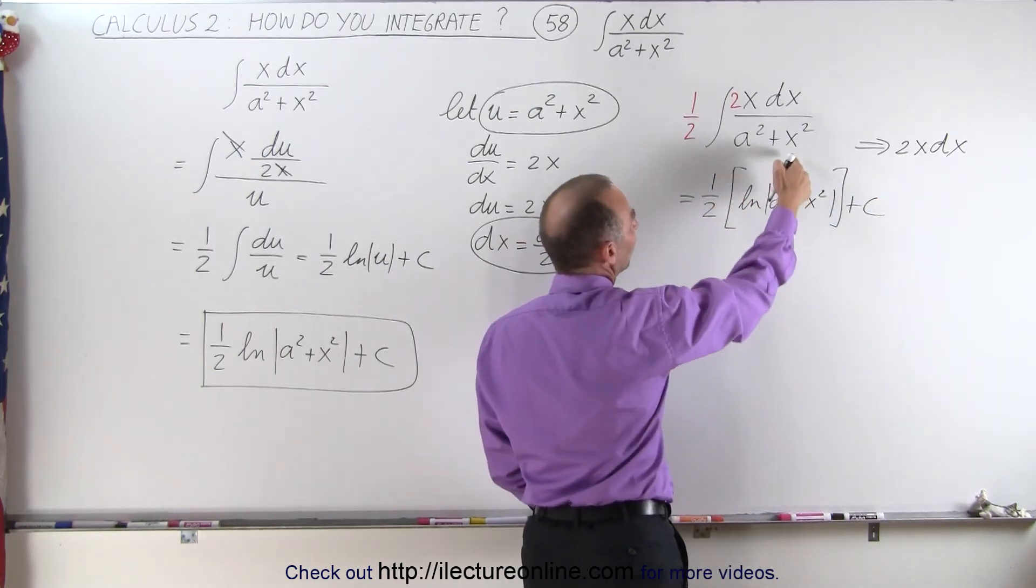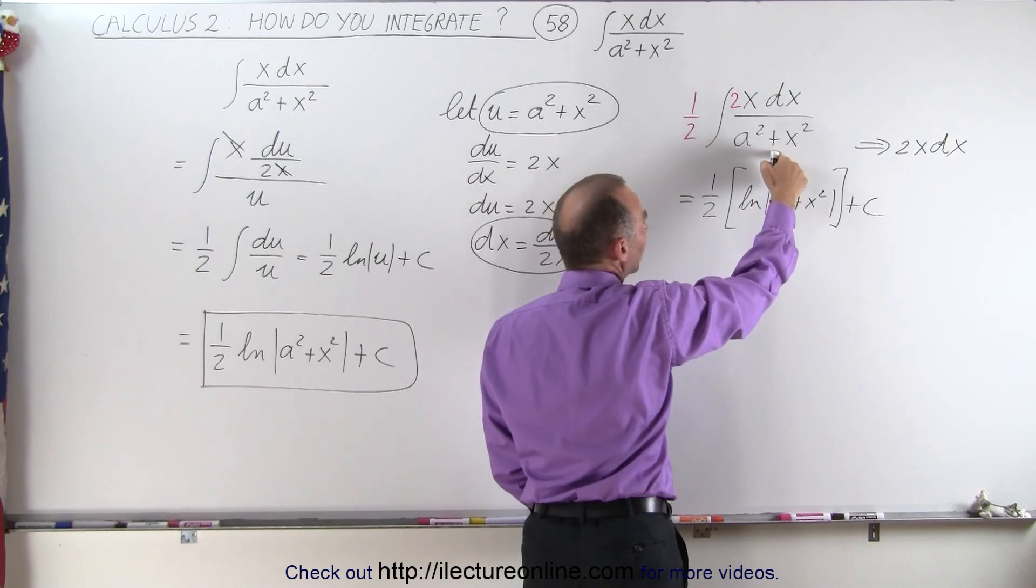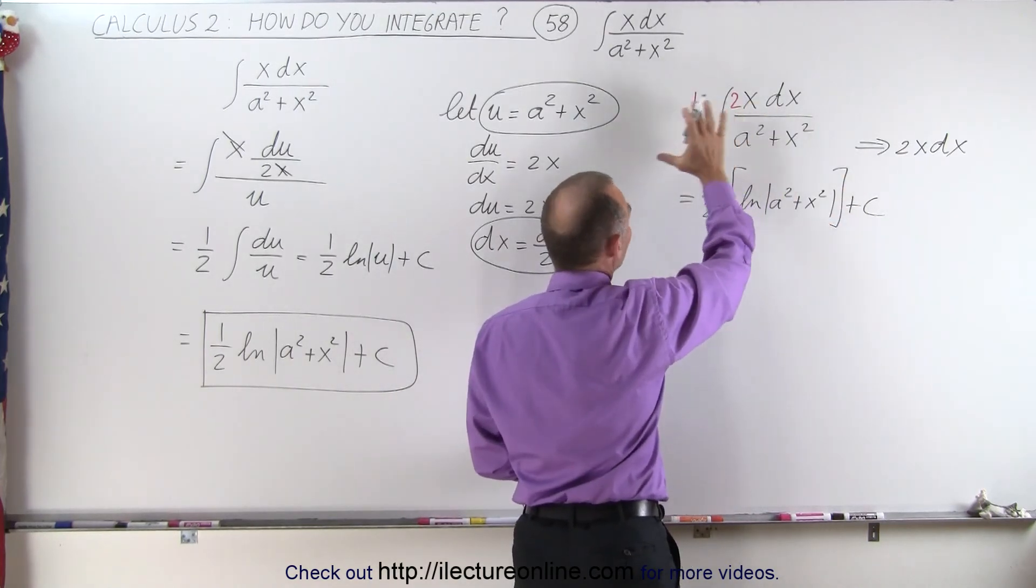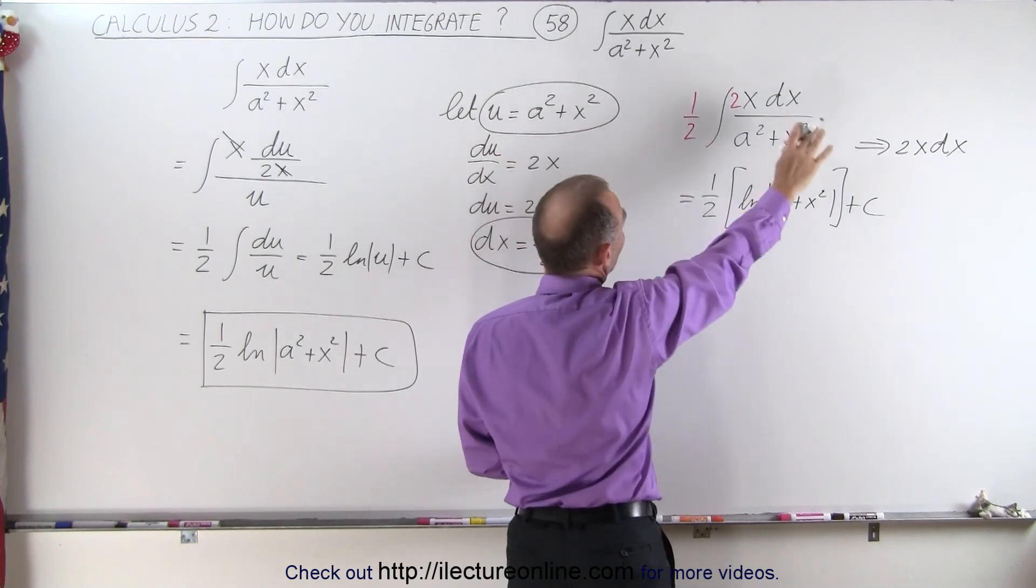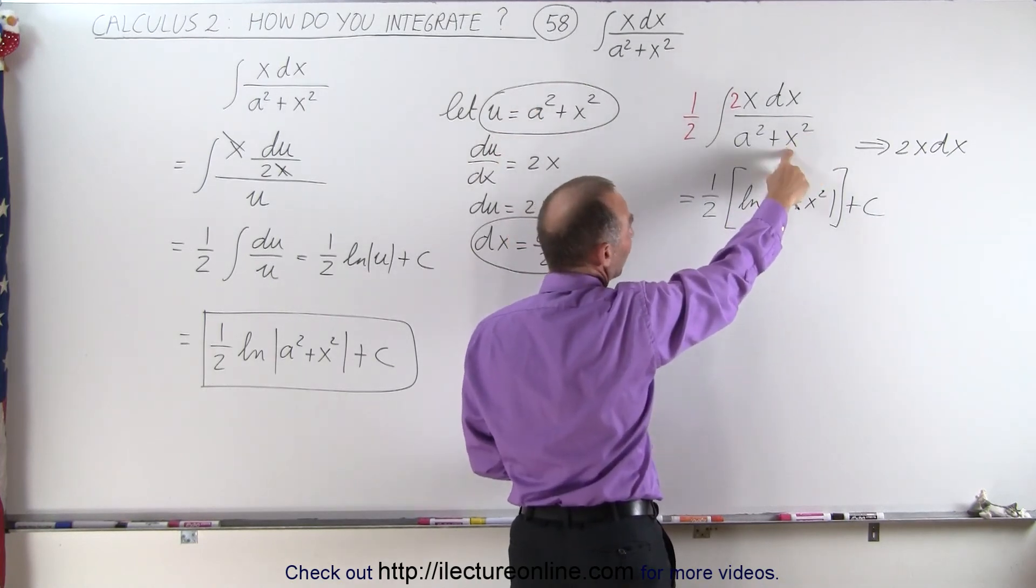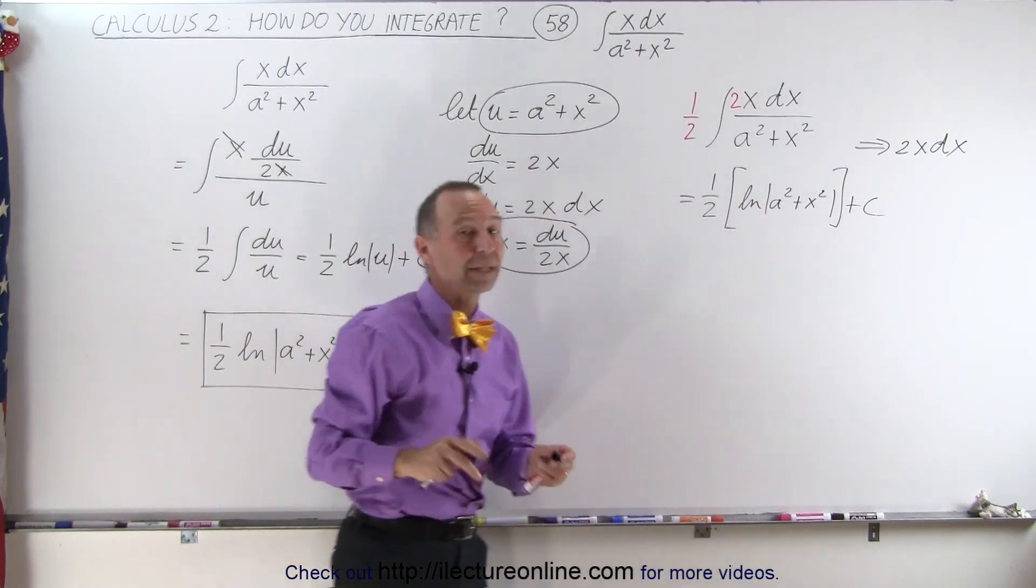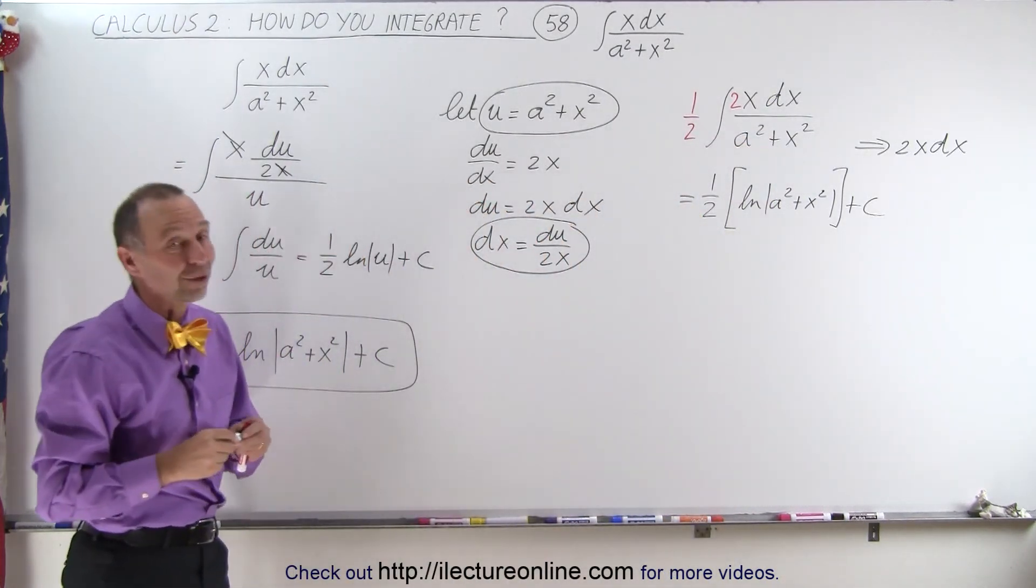In other words, since in the numerator I have the differential of the denominator, I can simply take the natural log of that. And so we can accomplish the very same thing that we did here by simply recognizing we need the differential of 2x dx in the numerator, so I can take the natural log of that. And that's how it's done as well.